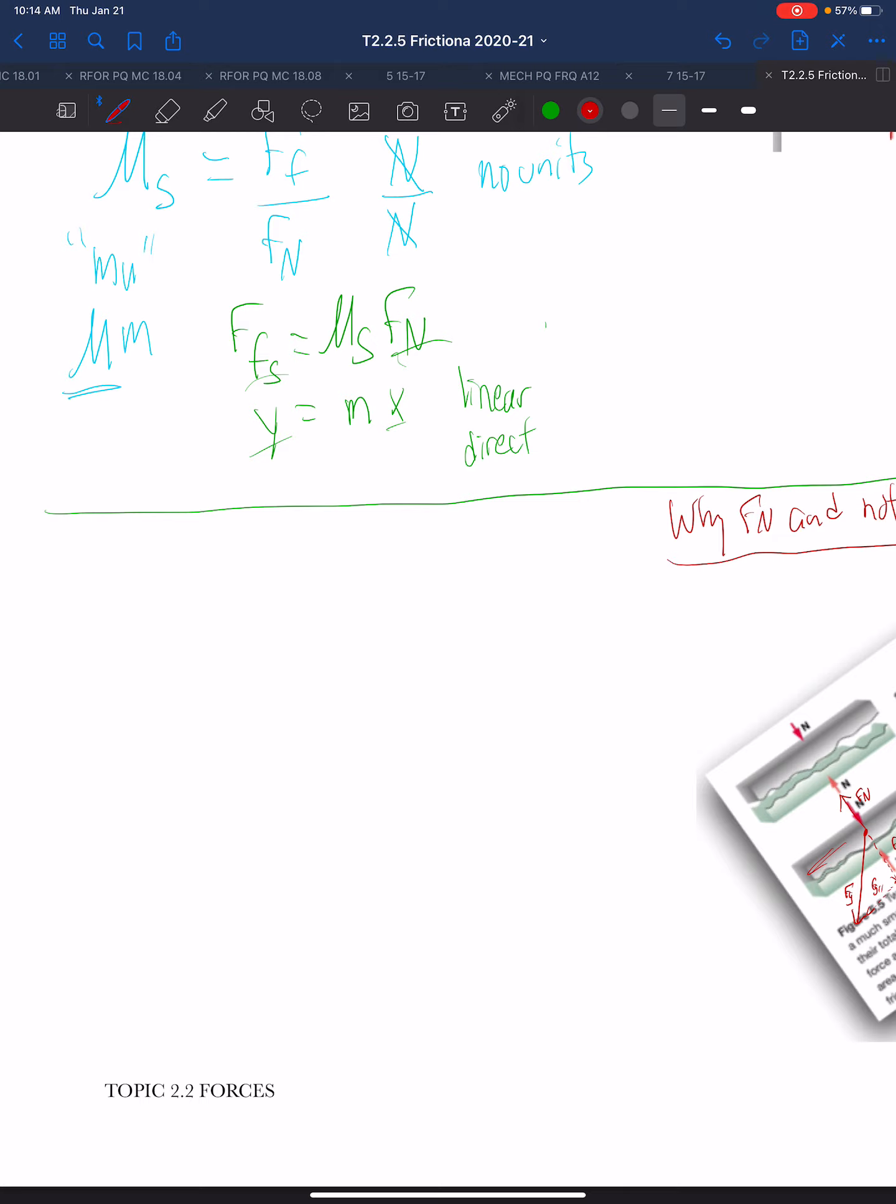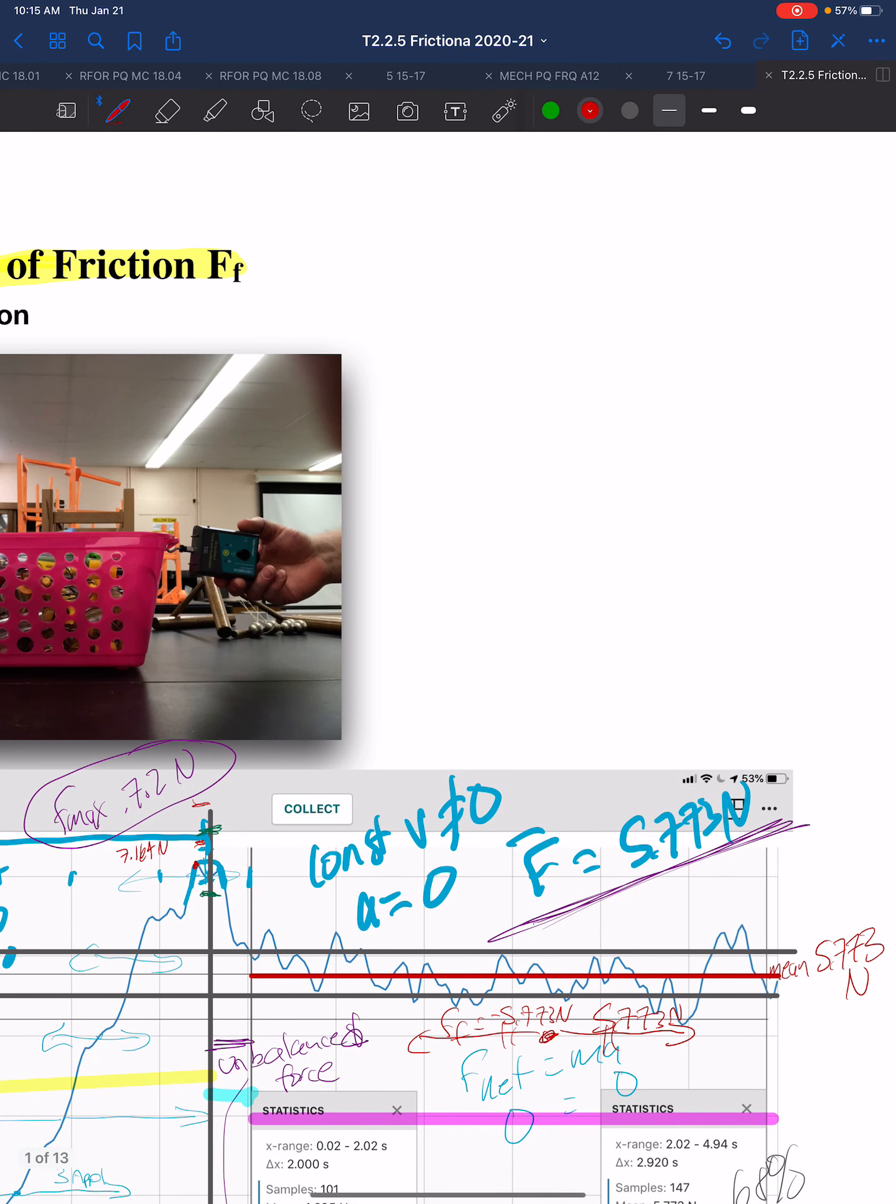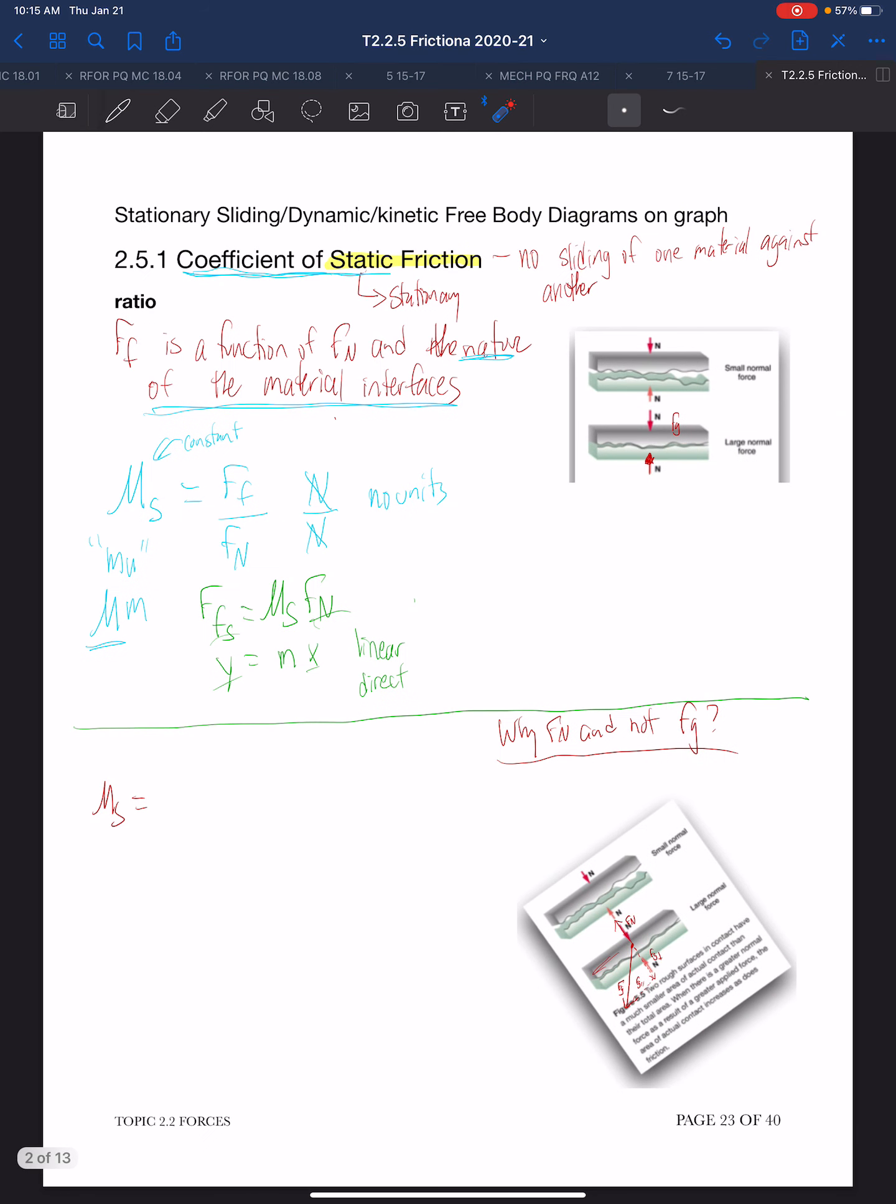When we look at our experiment, we had a maximum force of 7.2 newtons. So we have our force of friction, which was 7.2 newtons, and we have a force normal.